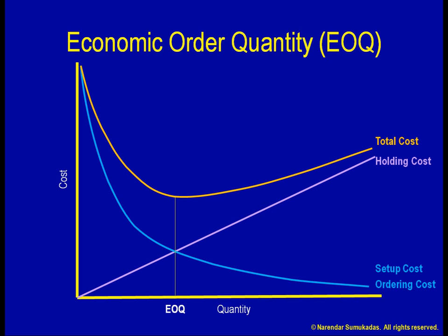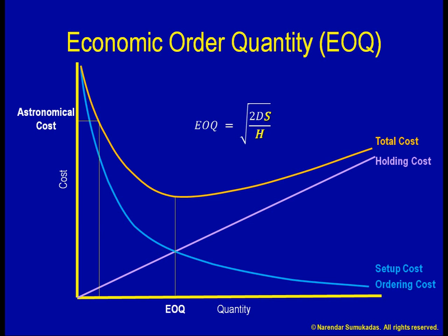Given the EOQ analysis and the reasons for large batches, how can we justify a push for low inventories? With smaller batches, wouldn't our costs become astronomical? The EOQ model treats the inventory holding cost and setup cost as fixed parameters. Once we know these values, the dependent variable called EOQ can be calculated. Given a particular set of inventory holding cost and setup cost, the EOQ does in fact represent the optimal batch size.